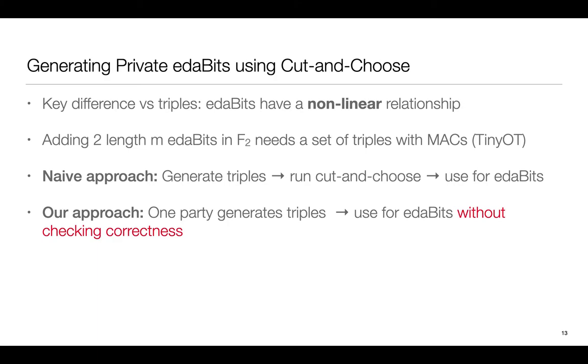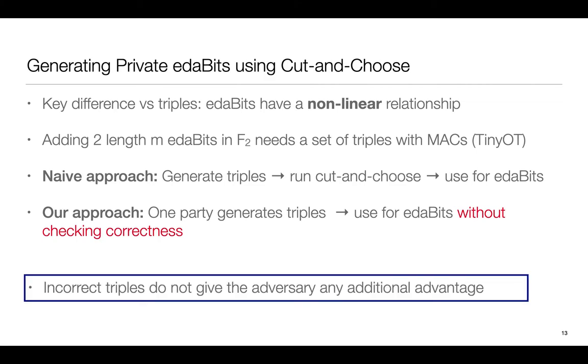Our approach instead was to let the party that is proposing the set of private EDABITS also propose the required TinyOT triples. We then proceed to use these unreliable triples in the Cut-and-Choose with EDABITS directly. Turns out letting the adversary propose potentially incorrect triples doesn't actually increase the chances of winning in the Cut-and-Choose game. It did however mean that we had to reanalyze the game and prove that the adversary doesn't gain any additional advantage which is what a large part of the paper does. In fact we found that this makes it a bit harder for the adversary to cheat.